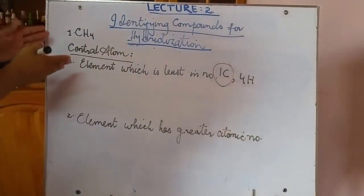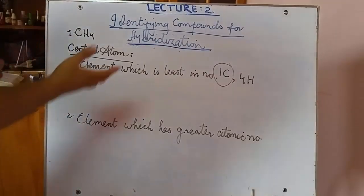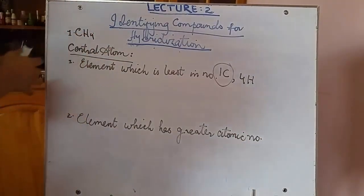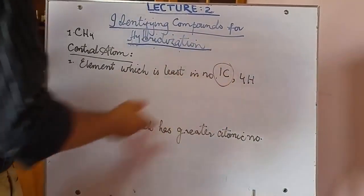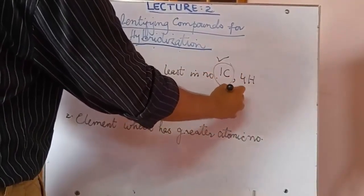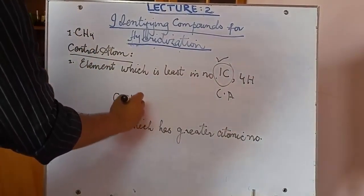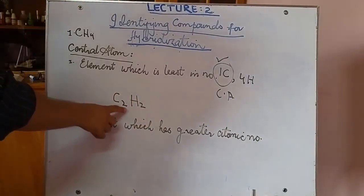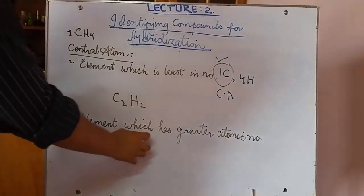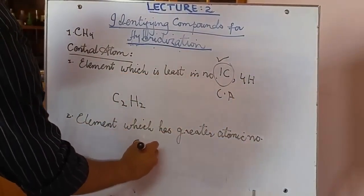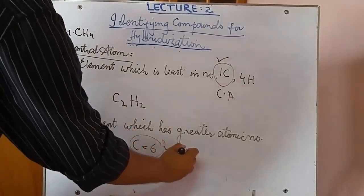Now, the sigma bonds you count belong to the central atom, so how do you identify the central atom? There are two logics. First: the element which is least in number is the central atom — here we have one carbon and four hydrogens, so carbon is the central atom. Second logic: if given a compound like C2H2 where both elements are equal in number, the element with the greater atomic number is the central atom — carbon has atomic number 6, hydrogen has 1, so carbon is the central atom.